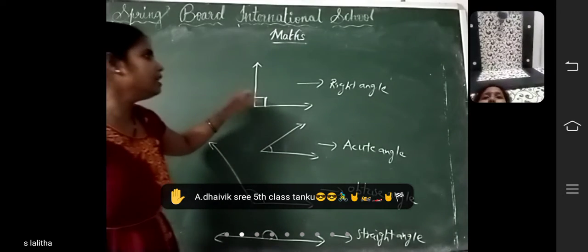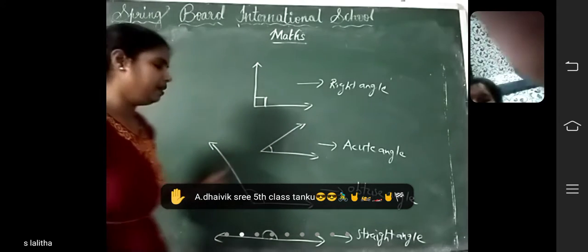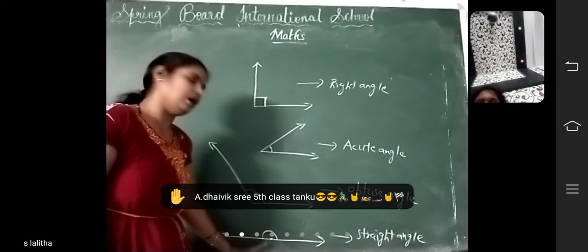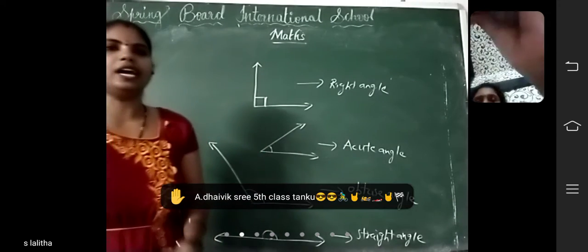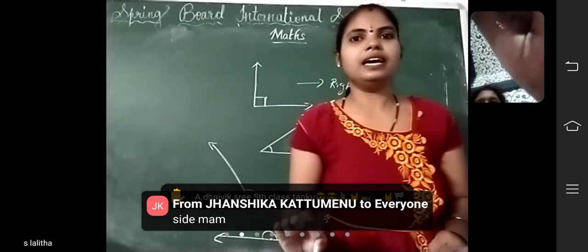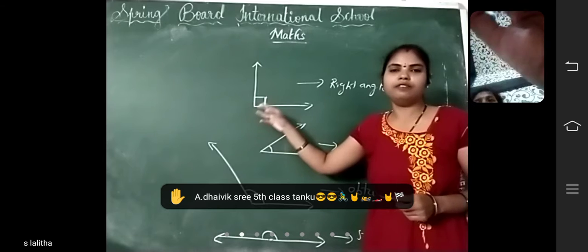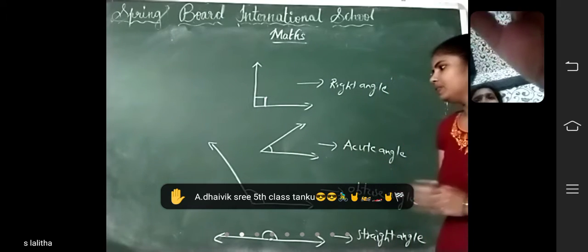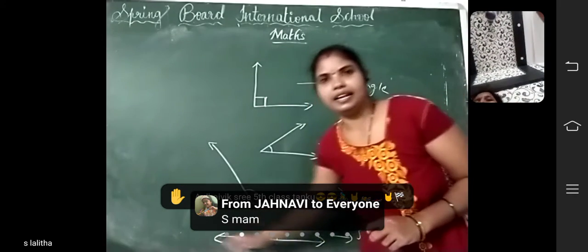Did you understand? Right angle can be represented as a square. Acute angle can be represented as an arc — it is smaller than a right angle. Obtuse angle is also represented as an arc — it is bigger than a right angle. Straight angle looks like a straight line.